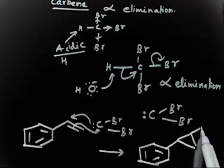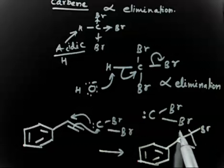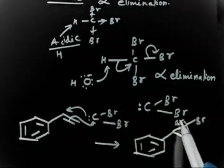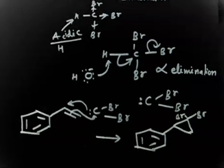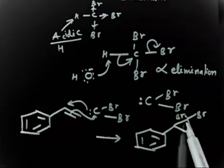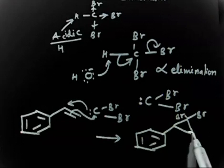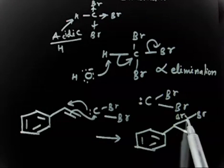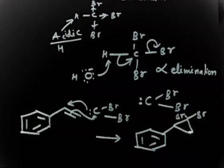So you have Br here and one more Br here, and then CH2. This is an example of an alpha elimination reaction. You see here you have a carbon chain of three carbons, and this carbon has Br, Br attached. So you will have a three-carbon side chain and one carbon attached to two bromines — that is the final product we are looking for.